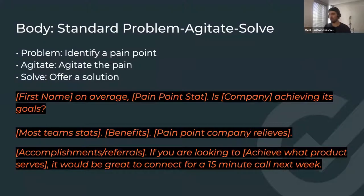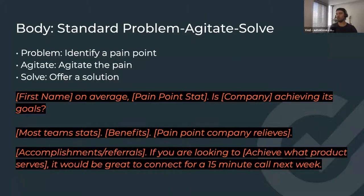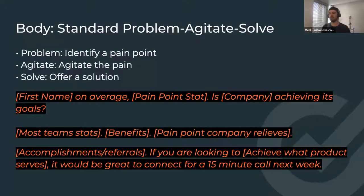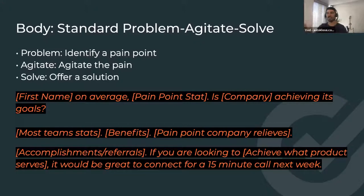When it comes to the body of an email, there are a couple of techniques you can use — there are a bunch of them online. We use two in this presentation. One is the standard Problem-Agitate-Solution type of thing, where you start with the first name, then there's a pain point and a question — is your company achieving that particular goal? You're basically trying to get to the main point of the email, then go into a pain point and how you can relieve it.